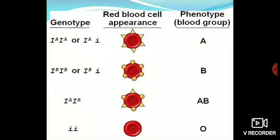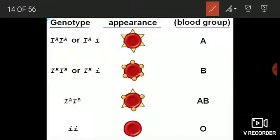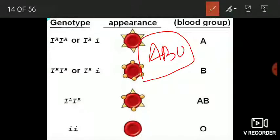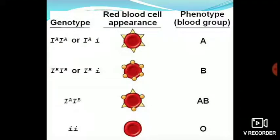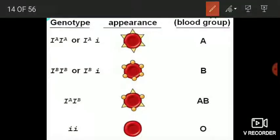Welcome back, students. Today we will continue with the concept of codominance and further study the ABO blood group example. In the previous part I forgot to mention something more about ABO blood groups, which is why we are revisiting this example. Codominance is a form of inheritance wherein the phenotype of the F1 hybrid — the phenotype of the heterozygote — represents and expresses the phenotypes of both parents in the offspring.